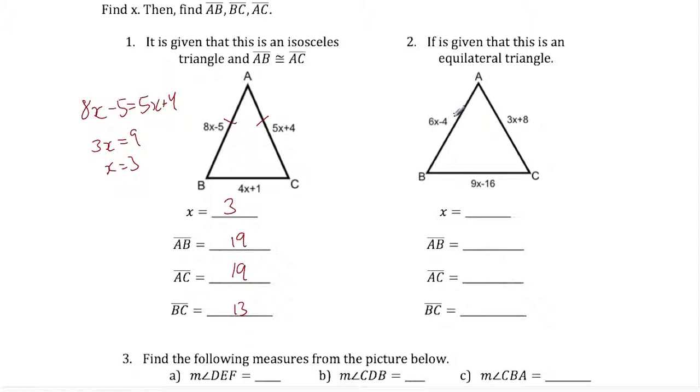Next up we have an equilateral triangle, so all these sides are the same length. We can choose any two sides to be the same. So I'll choose AB equals AC again. So I get 6x minus 4 is equal to 3x plus 8. We can subtract 3x from both sides so we get 3x. We can add 4 to both sides to get 12. So we get that x equals 4.